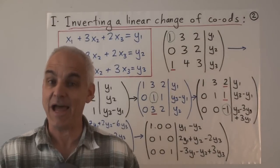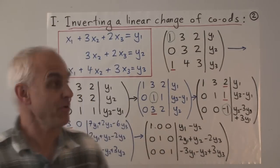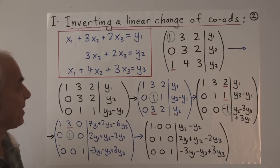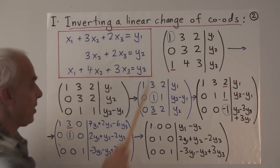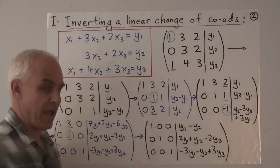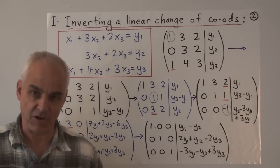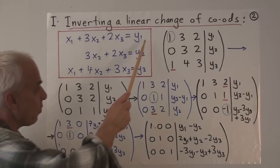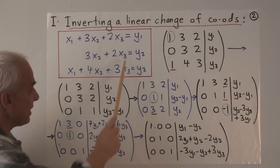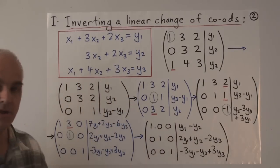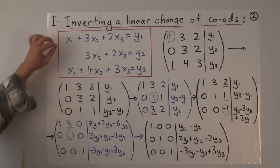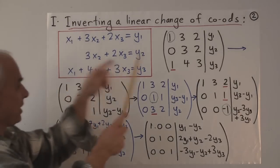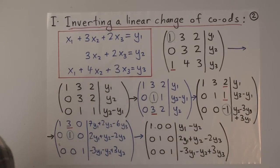Our first problem is how to invert a linear system. Here we have x1, x2, and x3 as one set of variables, and y1, y2, y3 as a second set of variables. We've got y1, y2, y3 expressed as a linear combination of x1, x2, x3, and our job is to invert that — in other words, to write x1, x2, and x3 as a linear combination of y1, y2, y3.